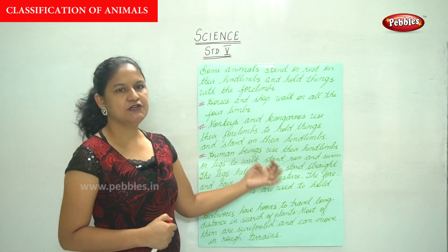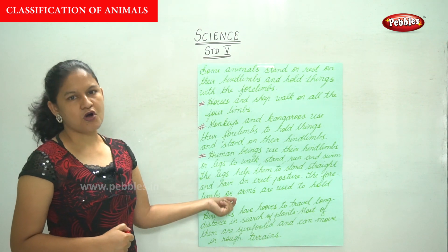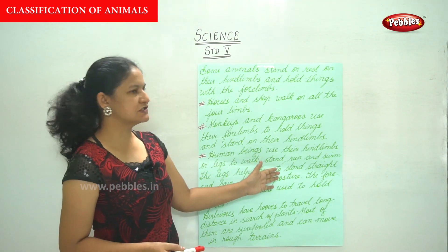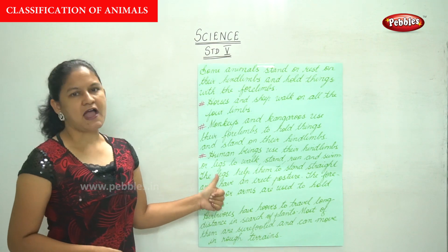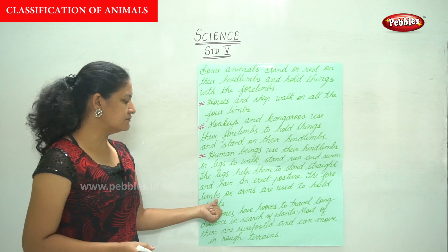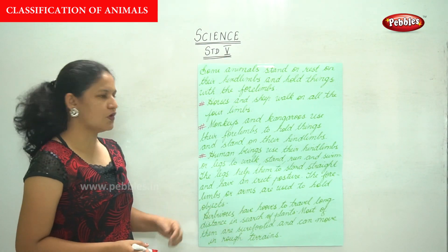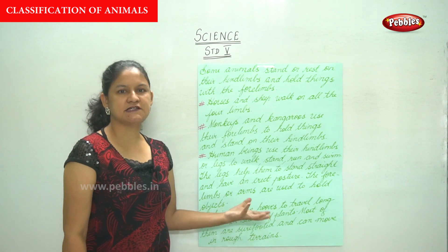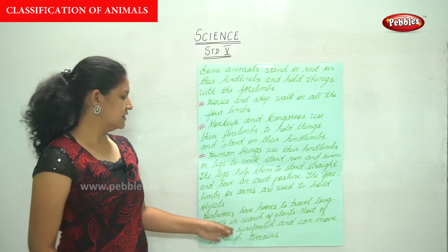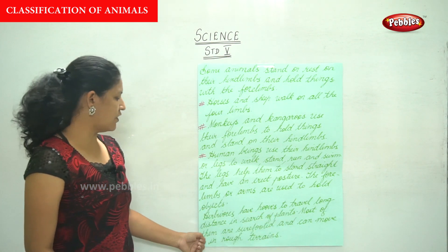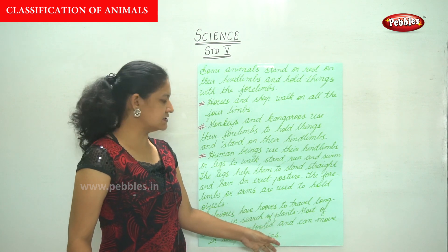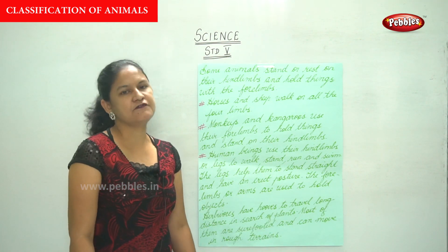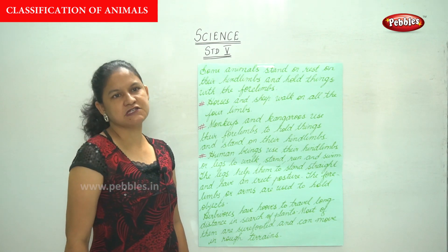Human beings use their hind limbs, or legs, to walk, stand, run, and swim. The legs help them to stand straight and have an erect posture, while the forelimbs or arms are used to hold objects. Herbivores have hooves to travel long distances in search of plants, and most are sure-footed and can move in rough terrains.